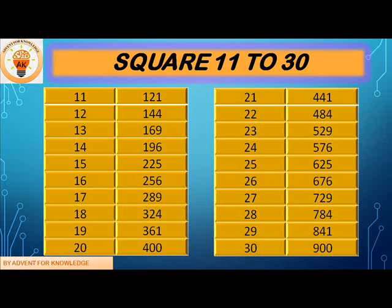21 square is 441, 22 square is 484, 23 square is 529, 24 square is 576, 25 square is 625, 26 square is 676, 27 square is 729, 28 square is 784, 29 square is 841, 30 square is 900.